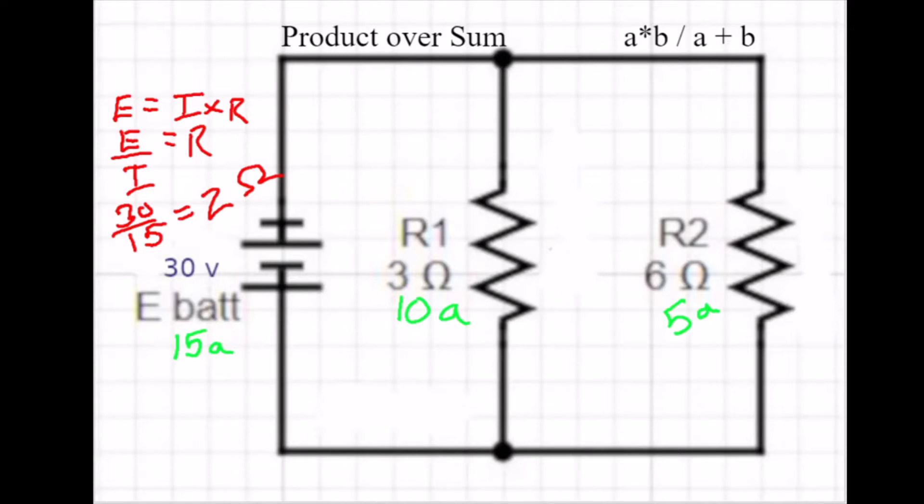So what we're looking for is a formula where we can do this pretty quickly, and the formula is the product over sum. So let's give that a try. So let's take the product, which is going to be the product of the first resistor times the second resistor. So that's going to be 3 ohms times 6 ohms. That's going to equal 18 ohms, right?